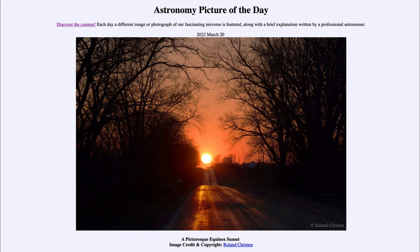This is not the only equinox of the year — there will be a second one in September. At that point, the sun will cross the celestial equator going from the northern hemisphere of the sky to the southern, and the days will get shorter and shorter. You would get a very similar picture in September. This particular image is not from today's equinox but was taken seven years ago in March of 2015.